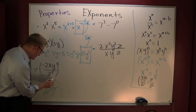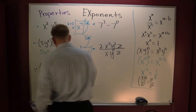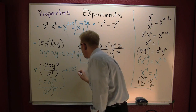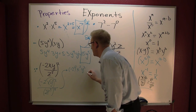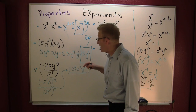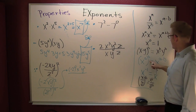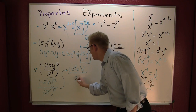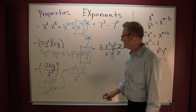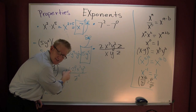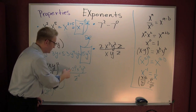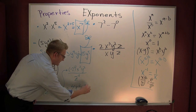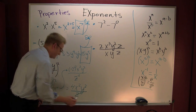Now let's distribute that power. Each factor gets a two. So this becomes: negative two squared, times x squared, times y to the fourth — wait, y squared — all over z to the fifth squared. Down there I've got a power raised to a power, so I multiply: 5 times 2 gives z to the ten. Now, is this two or minus two? That's positive two because the minus is inside the parentheses. So this simplifies to 4x squared y squared all over z to the ten.